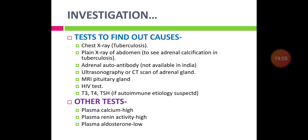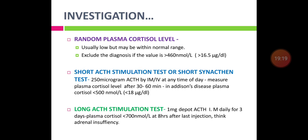Other tests: plasma calcium level is increased, plasma renin activity is increased, and plasma aldosterone level is low in primary adrenal insufficiency. Initially, if adrenal insufficiency is suspected, perform a random plasma cortisol level — this is usually low but may be within normal limits.